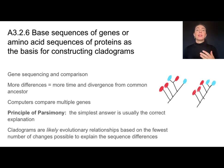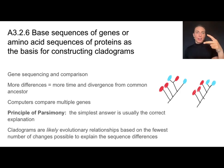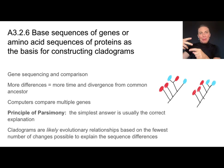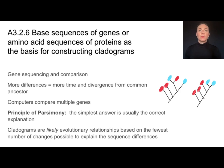When cladograms are being assembled, we're not just comparing one gene — you'd want to compare lots of genes organisms have in common. The problem is that different genes can suggest different likely relationships, so there's a lot of variety. Computers are a great tool to analyze patterns and come up with the most likely relationships based on what we call the principle of parsimony, which basically says the simplest answer is usually correct.